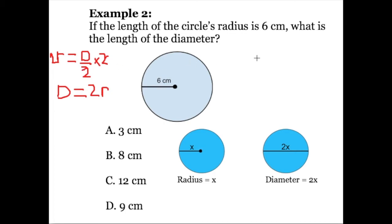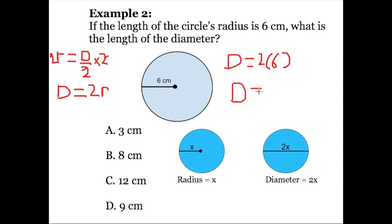So here, to get the value of the length of the diameter, we're going to use the formula diameter equals 2r and plug in 6. So we see diameter equals 2 times 6, and 2 times 6 is equal to 12. The units are centimeters, so the diameter is equal to 12 centimeters, which means answer choice C is the correct answer.